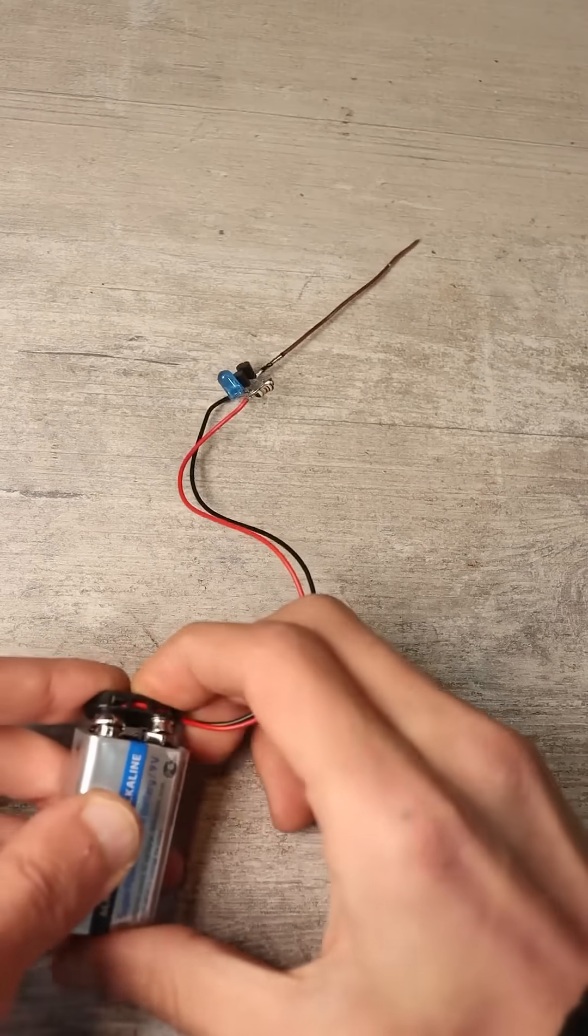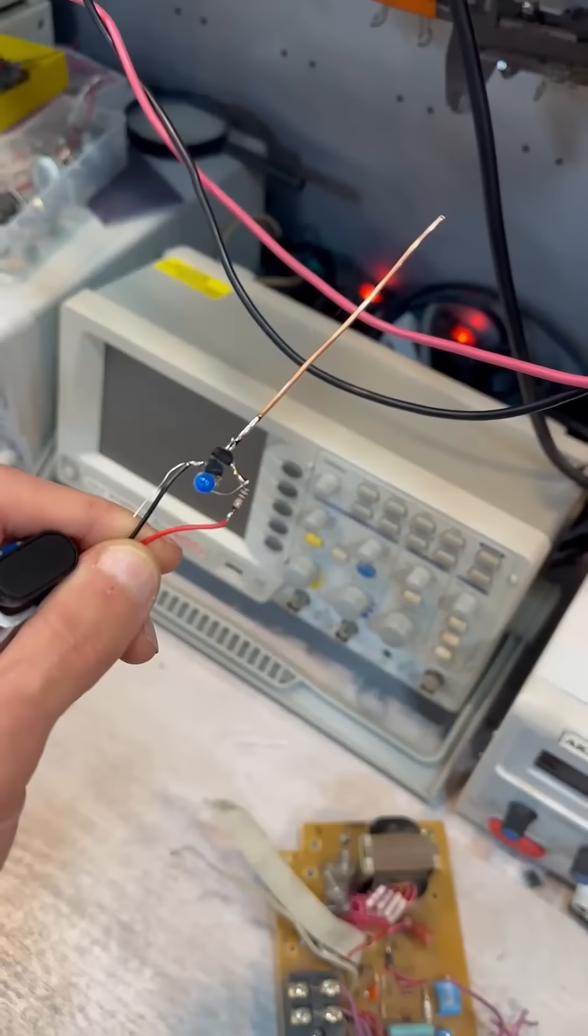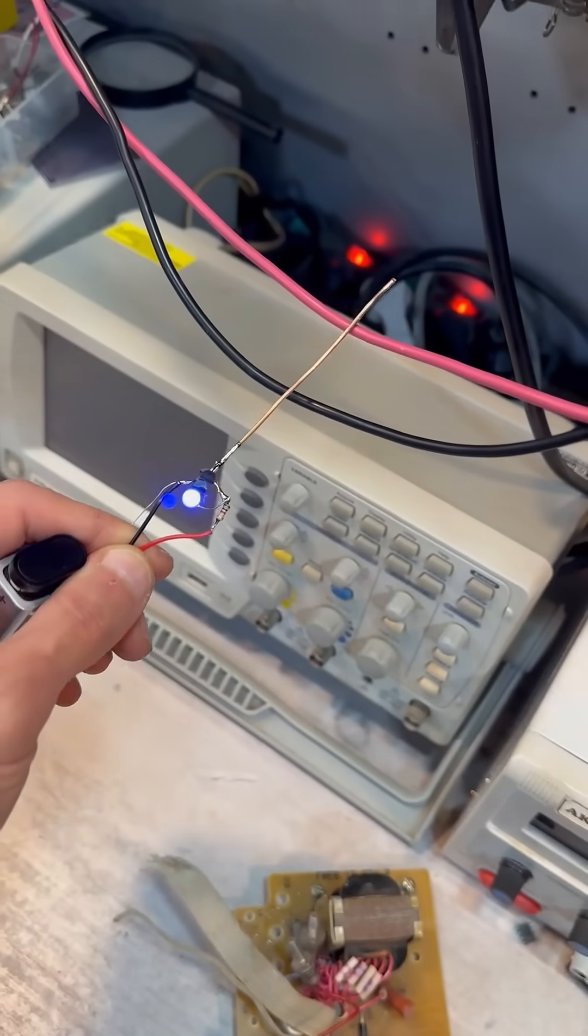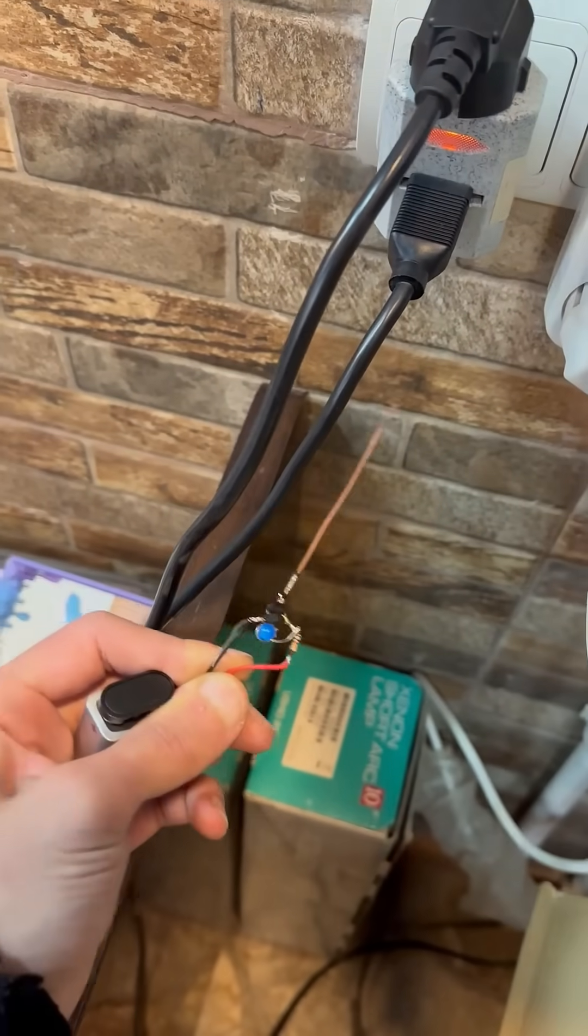Connect the assembled circuit to the battery, observing the polarity. When the antenna is brought near wires with high voltage or electromagnetic radiation, the LED will light up.